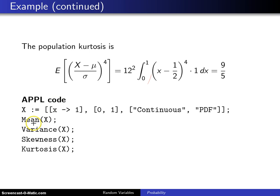The APPL code that can calculate the mean, variance, skewness, and kurtosis is: X is defined as a random variable with a probability density function of 1, a support that ranges from 0 to 1. This is a continuous random variable and this 1 right here is a probability density function.